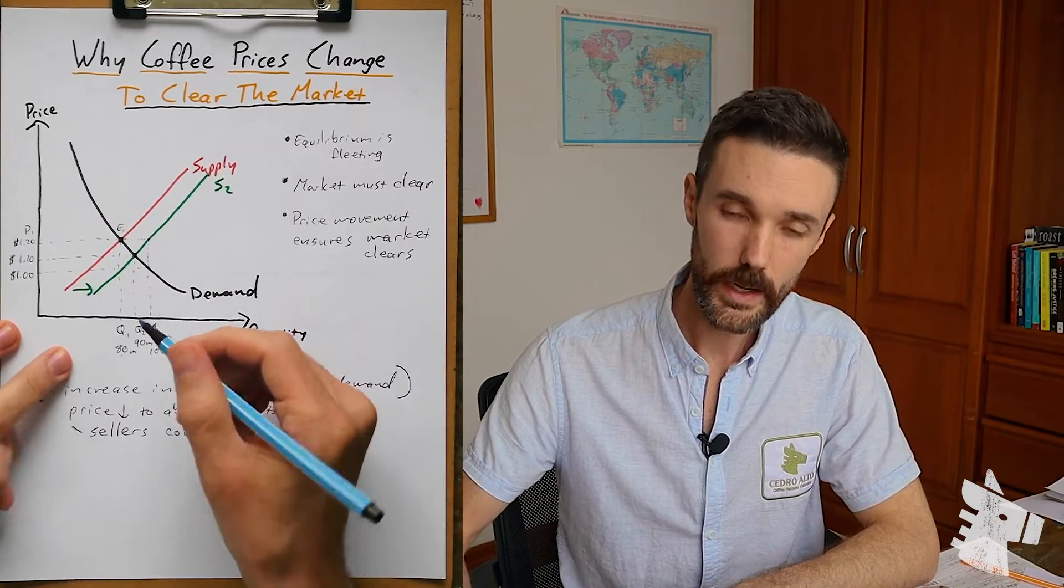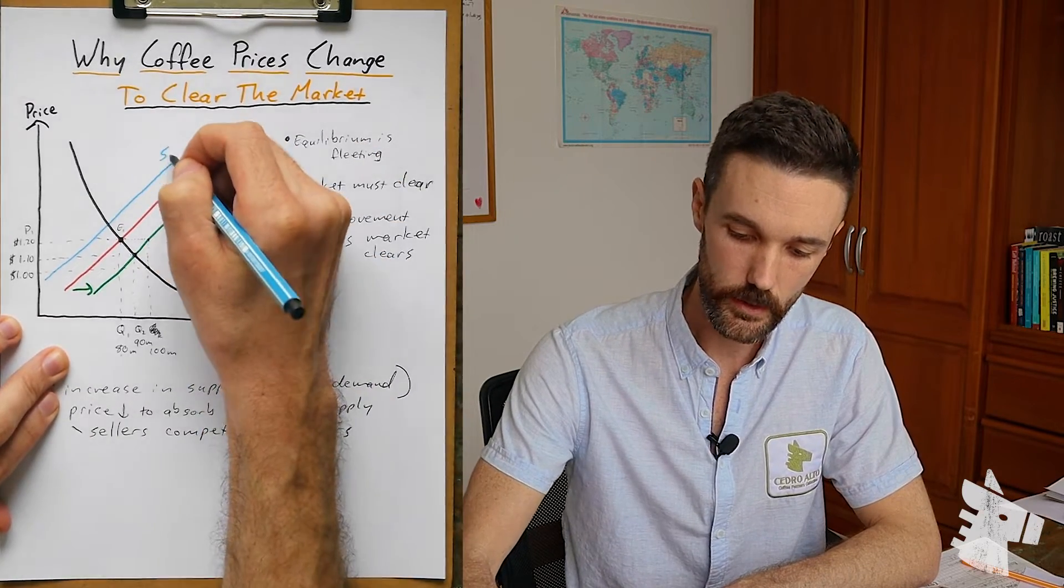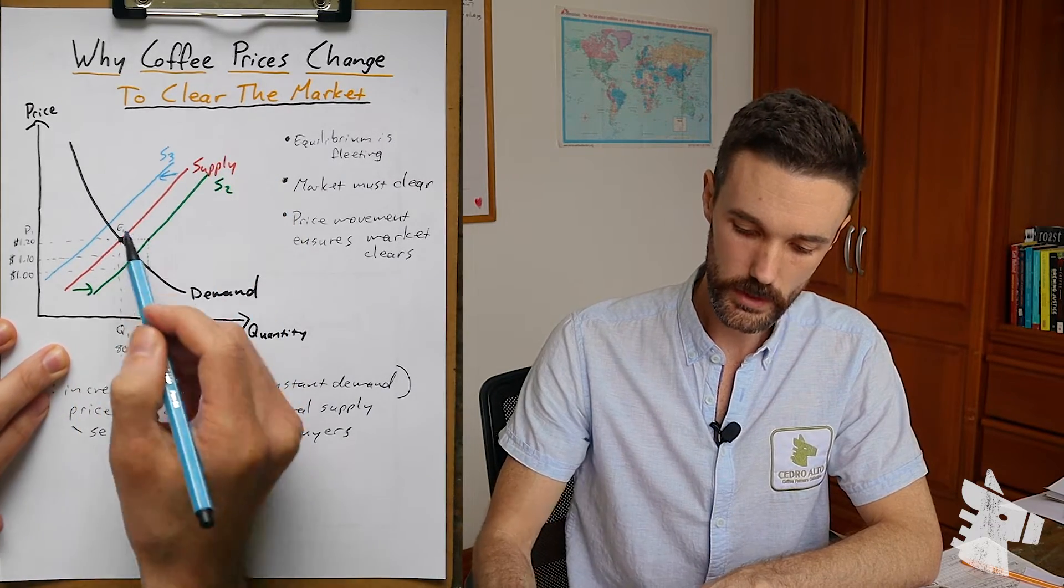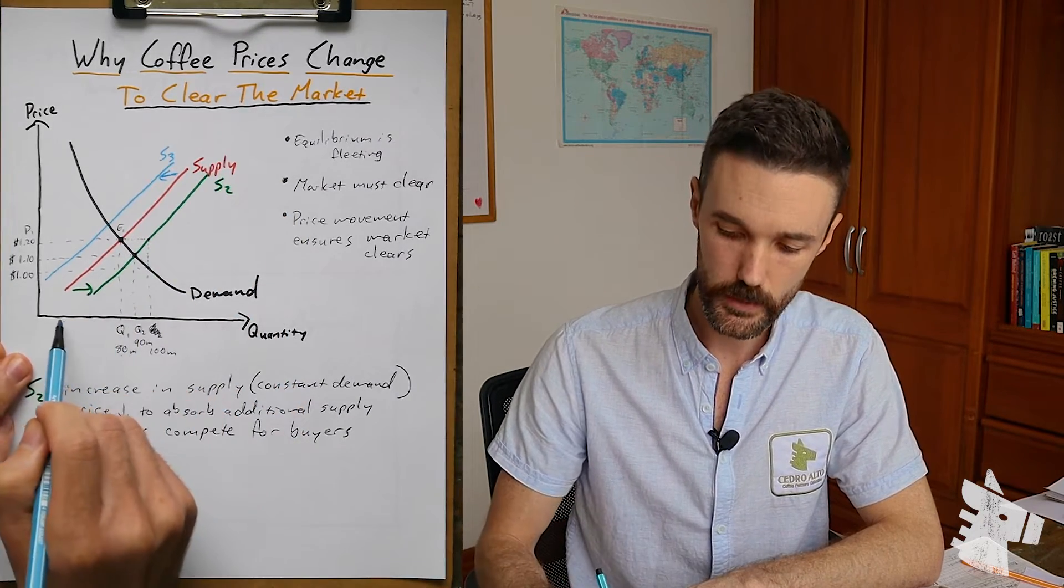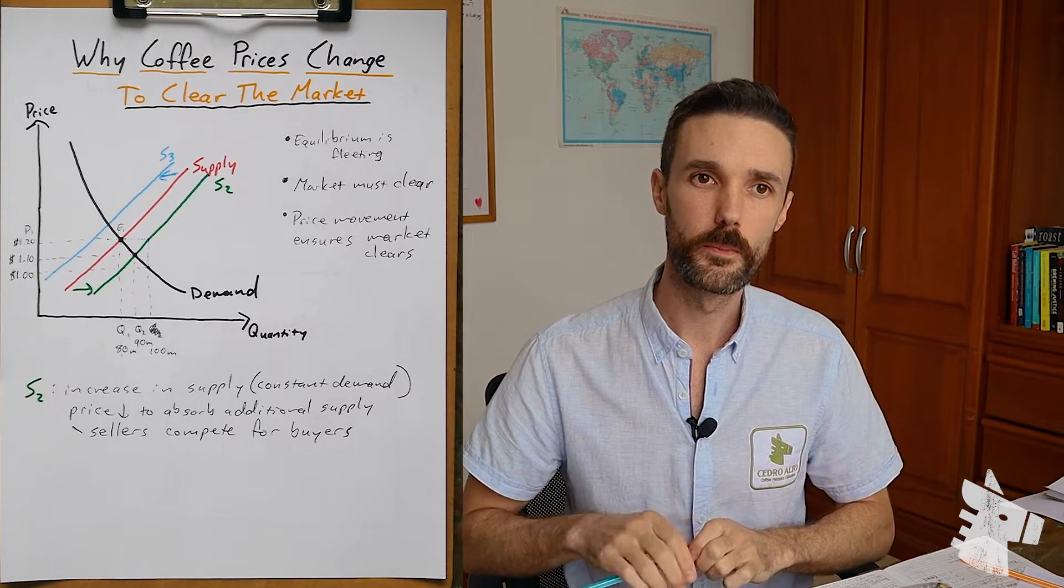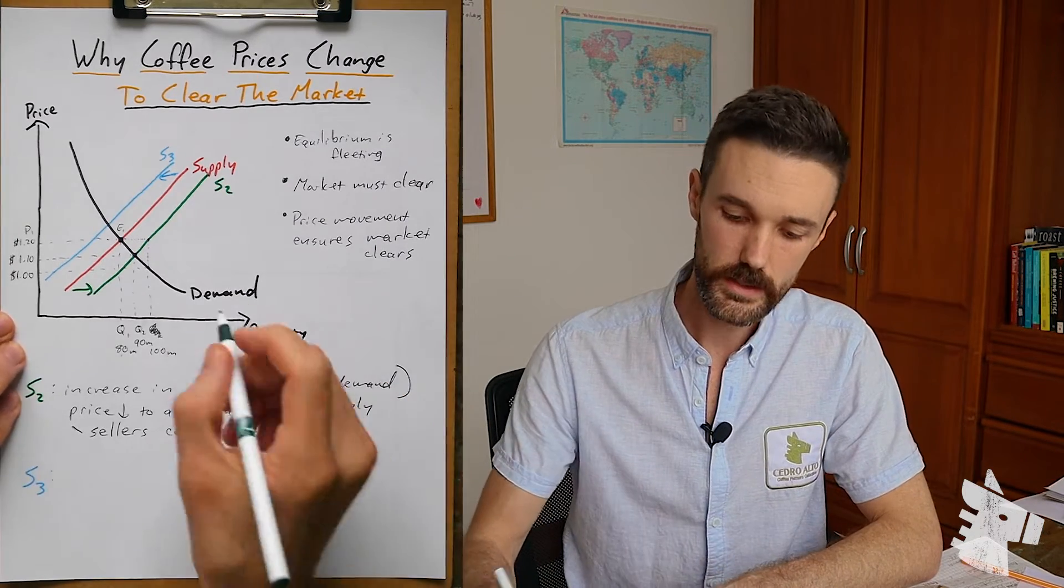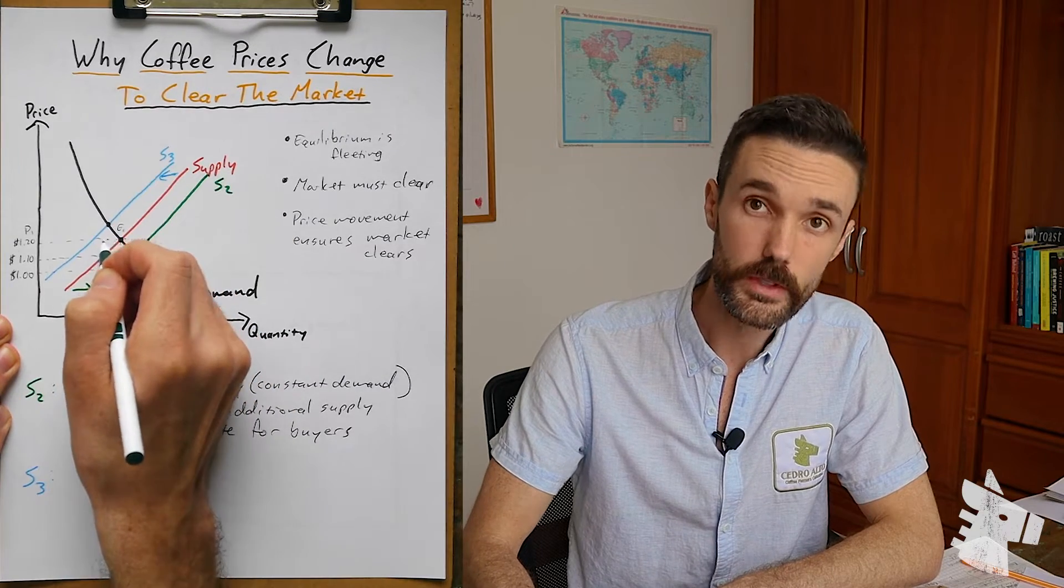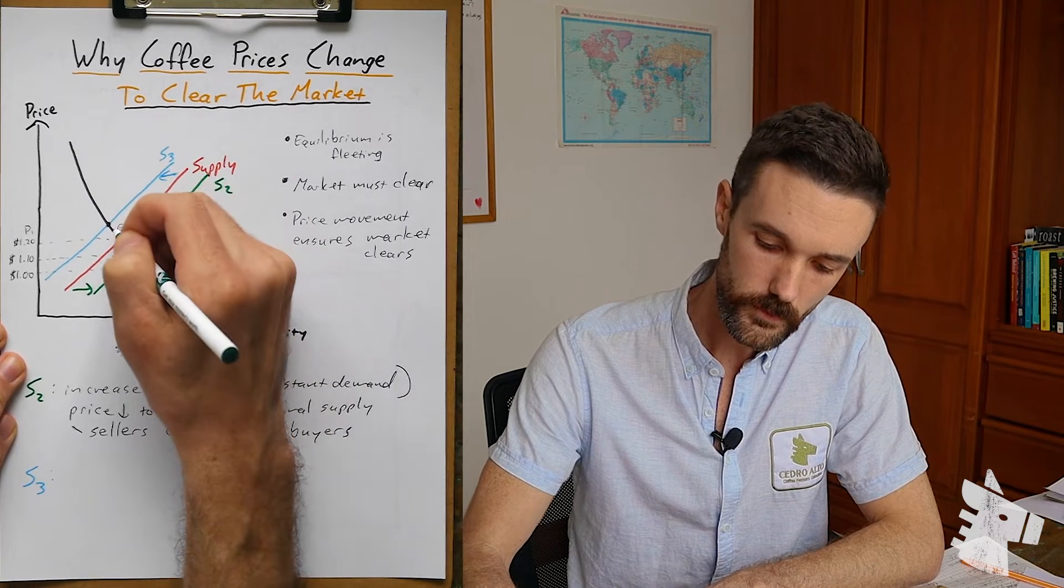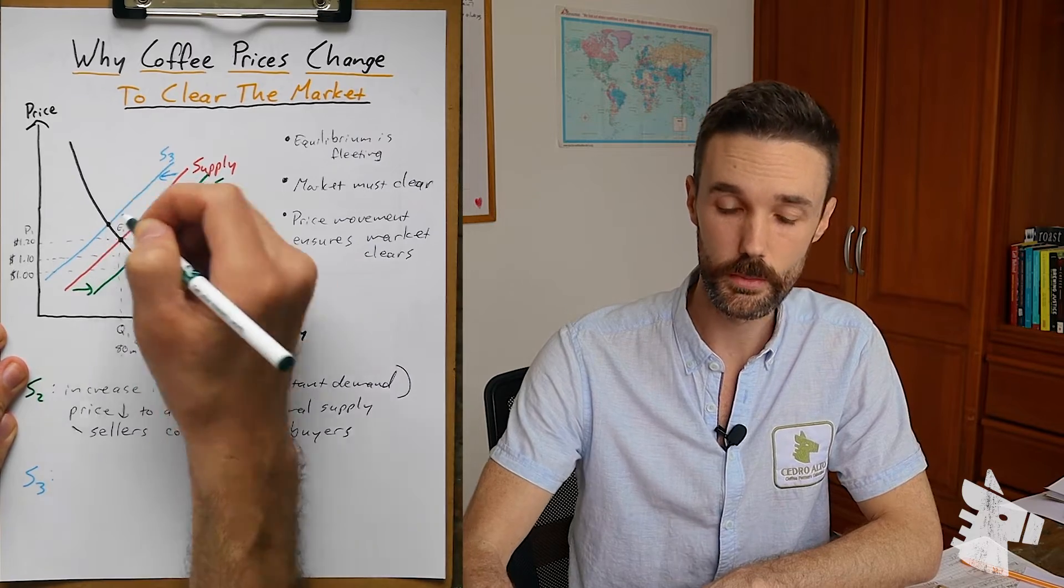Now let's look at the opposite. What happens when supply is reduced? Let's say this blue line is S3, or supply 3. This is a lower supply than we started with because it's further left on the quantity axis. Let's say that leading up to the harvest, there was poor weather in Brazil. So the global supply was reduced. Just as in the first example, as supply is reduced and the supply curve shifts inward, demand stays constant. So our equilibrium point will be moving up along the demand curve to meet the new supply curve.